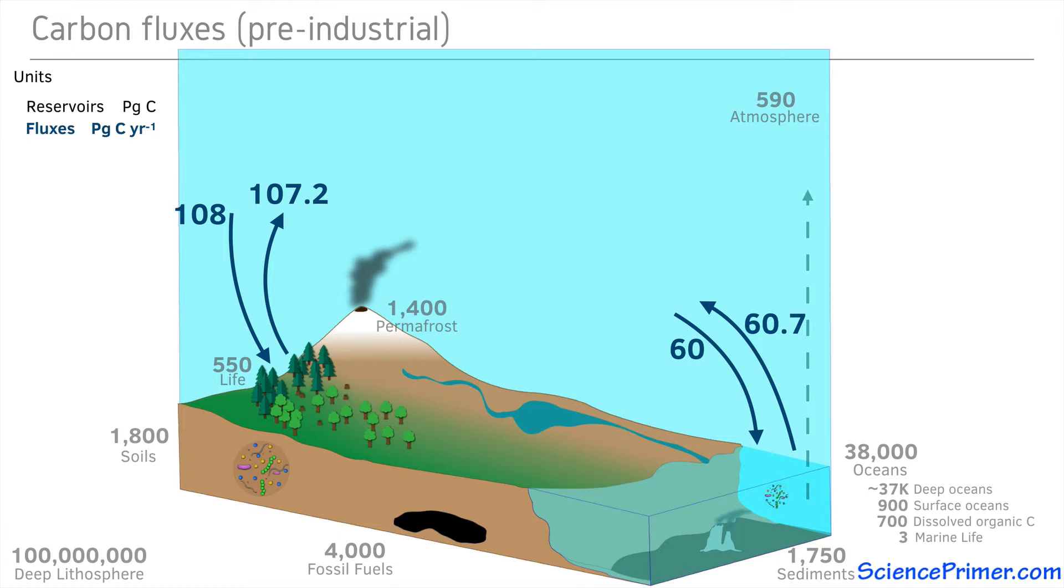In addition to these large fluxes, volcanic activity releases about 0.1 petagrams of carbon into the atmosphere every year. Chemical weathering of rocks transfers a small amount of carbon from the atmosphere and rocks to surface waters. Erosion also creates a flux from soil to surface waters. Once in the water, much of this carbon finds its way to the oceans.